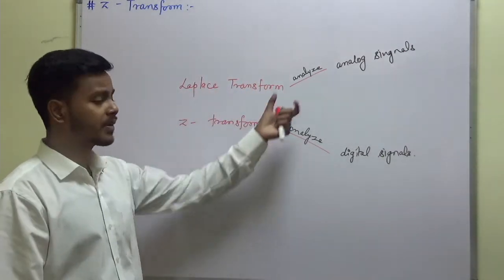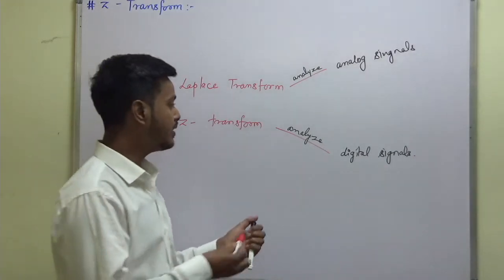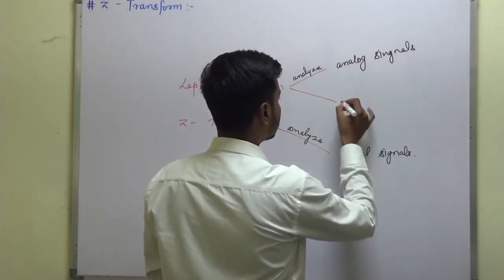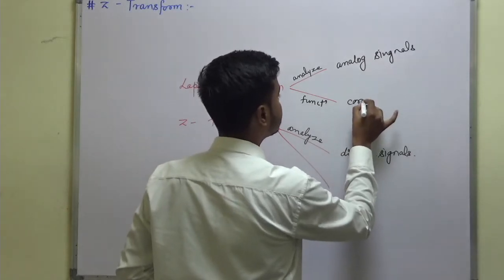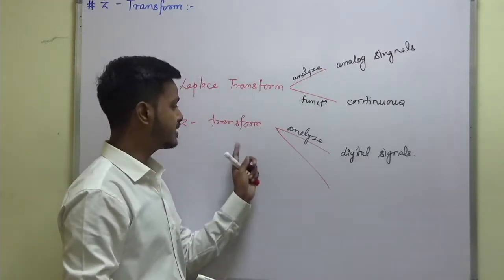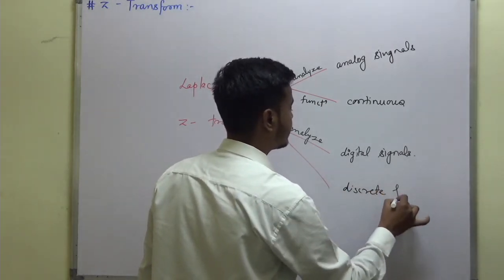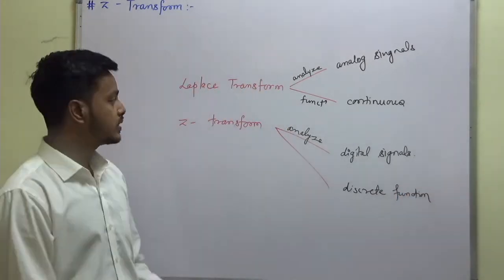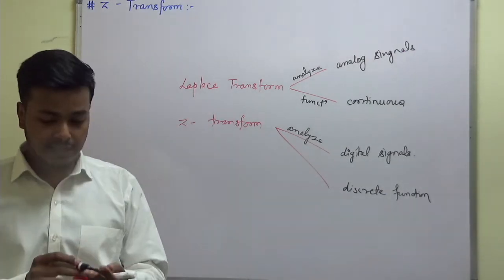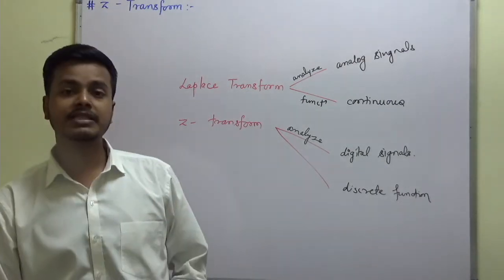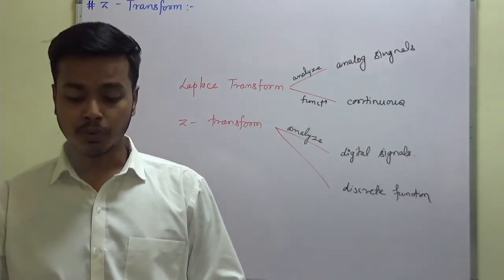The basic difference between Laplace transform and Z-transform is: in Laplace transform we have continuous functions, whereas in Z-transform we have discrete functions. Z-transform analyzes — or rather enhances — the electrical and mechanical energy to provide the dynamic nature of the system.